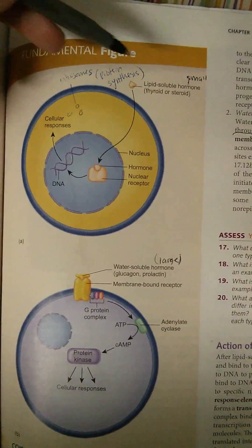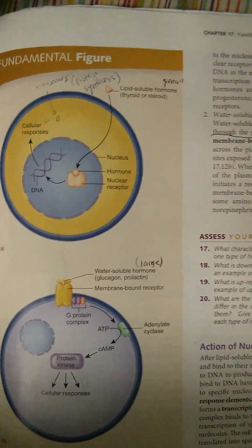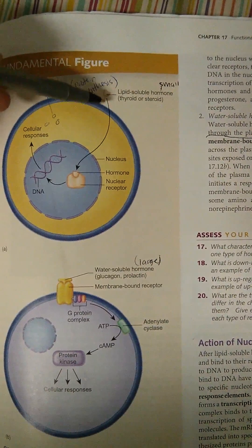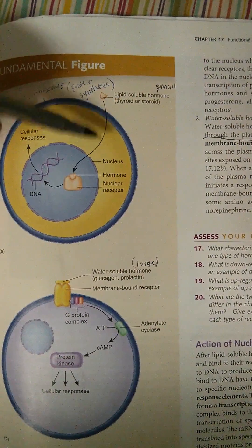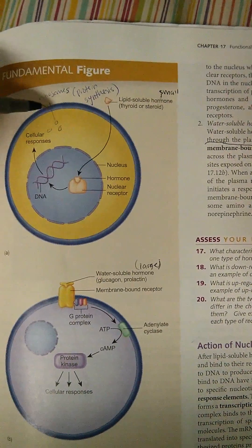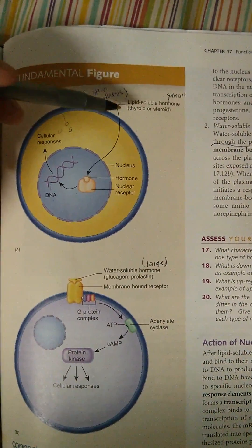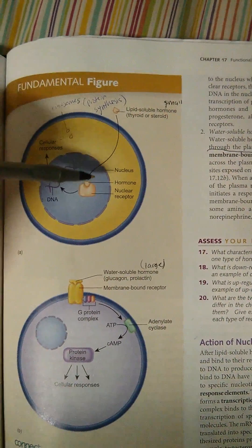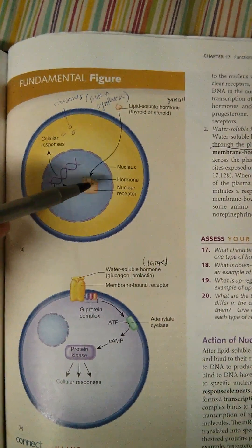So what happens is lipid-soluble hormones are very small. So this is the hormone here, and it's small enough that it can squeeze through the spaces in the plasma membrane. This is a cell, and this is the cell's plasma membrane. So it squeezes through because it's tiny, goes through the cytoplasm, and goes to the nucleus where there is a receptor waiting.